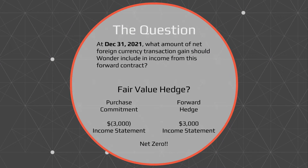The question is: at December 31st, what shows up on the income statement from this forward contract? This can be either a cash flow or a fair value hedge. If it qualifies as a fair value hedge, the purchase commitment has a loss of $3,000 at December 31st, which shows up on the income statement. The forward hedge will have a $3,000 gain, which also shows up on the income statement, netting us zero dollars.